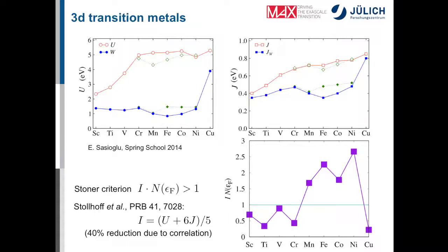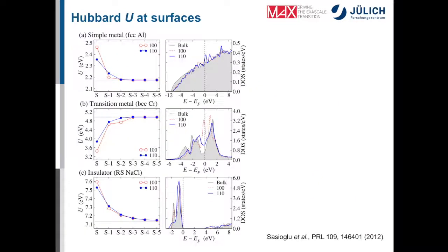And then they say in order to account for correlation, that's a rule of thumb, one should reduce it by 40%. And if you now calculate the left-hand side with these particular parameters then in fact we see that for exactly those materials which we know are ferromagnetic the left-hand side is in fact larger than one. So obviously the parameters that we calculate there are meaningful.